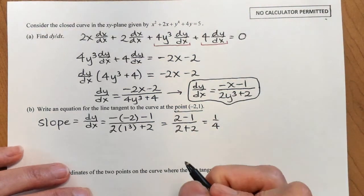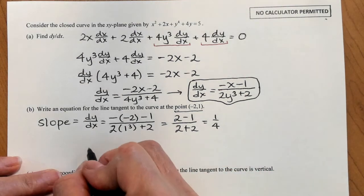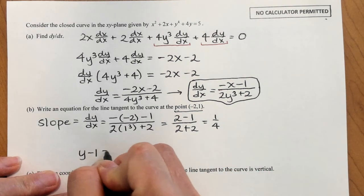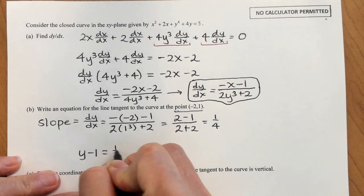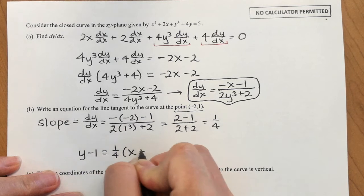So the equation of my tangent line is y minus 1 equals one fourth times (x plus 2).